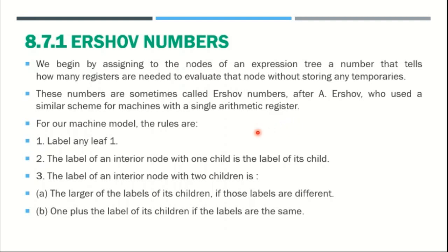While giving the numbering for any basic block or any similar scheme of machines, we use single arithmetic registers. With the help of single arithmetic registers we can give some numbers for each and every instruction and label. While generating the optimal code using Ershov numbers, we use three rules. The first rule: any leaf node label value is 1.